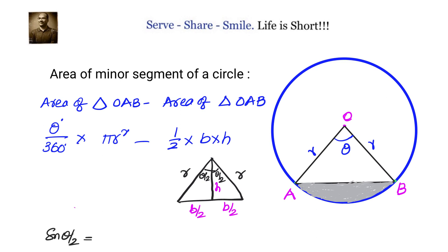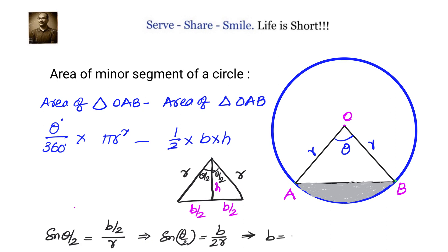We will use trigonometry. First, what is sin(θ/2)? Sin(θ/2) is opposite over hypotenuse, so it will be (b/2) divided by r. That gives us sin(θ/2) = b/(2r), or b = 2r·sin(θ/2).